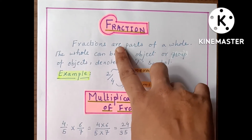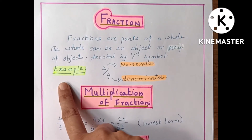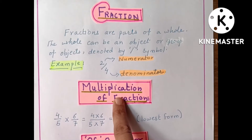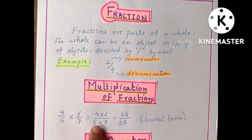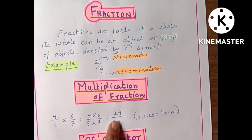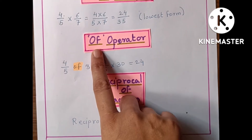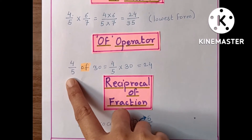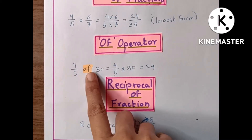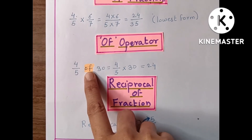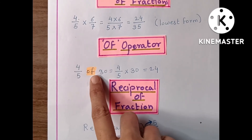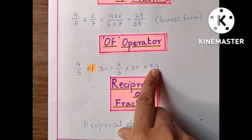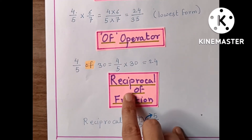The third page is fractions. Here is what a fraction is and an example of a fraction. Then multiplication of fraction — here is the multiplication of fraction and here is the product. Then the 'of' operator: 4/5 of 30 — here 'of' means 'into' or multiply. So I wrote 4/5 multiplied by 30 is equal to the product.